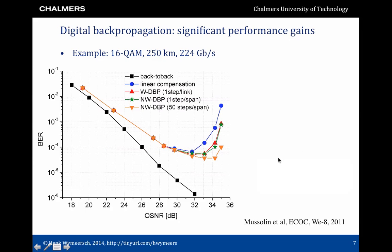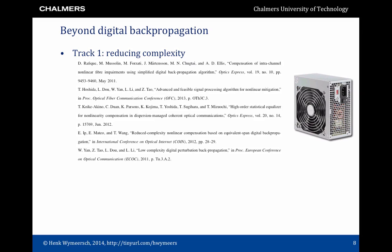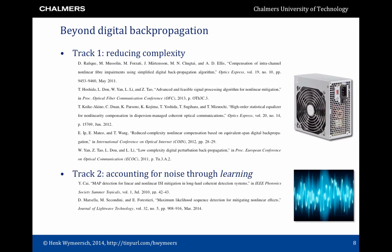Here is an illustrative example of digital backpropagation performance. On the x-axis is optical signal-to-noise ratio, on the y-axis the bit error rate. The blue curve, called linear compensation, corresponds to compensating only for linear impairments while ignoring nonlinearity. Comparing to the orange curve — digital backpropagation — we see significant performance gains. This excellent performance has led to two important research tracks: one large track on reducing the complexity of digital backpropagation, and a second smaller track dealing with how to account for noise, where the dominant technique has been to use learning.